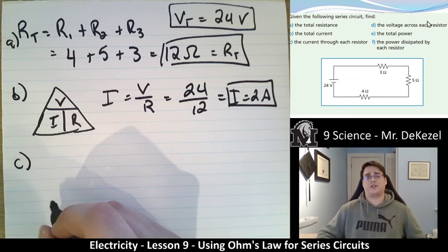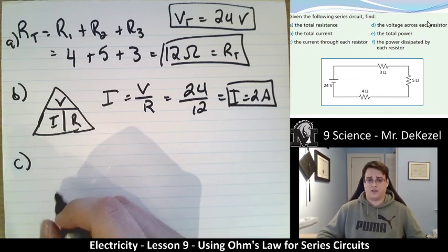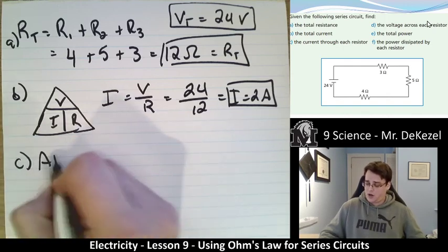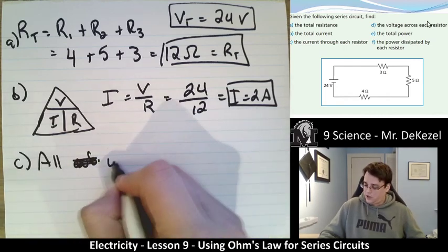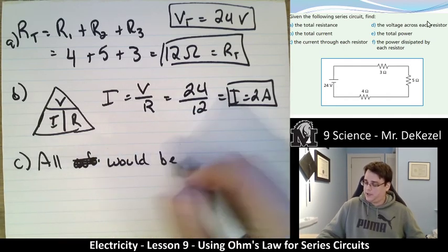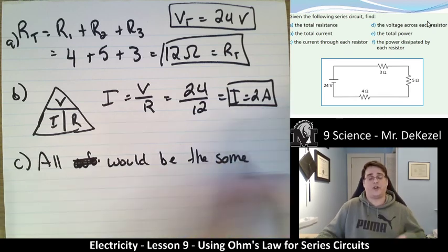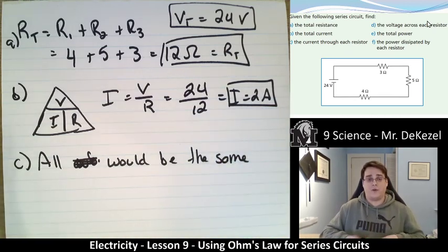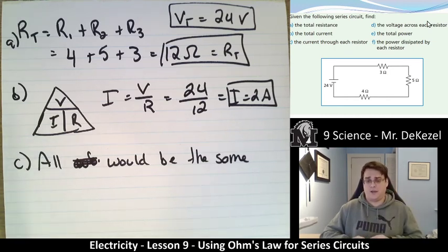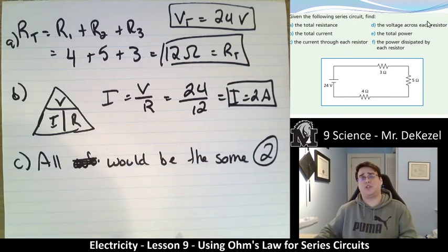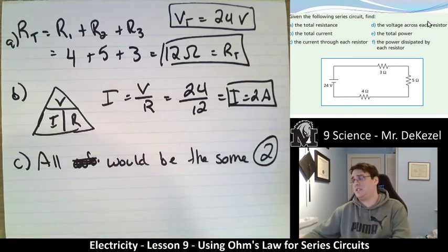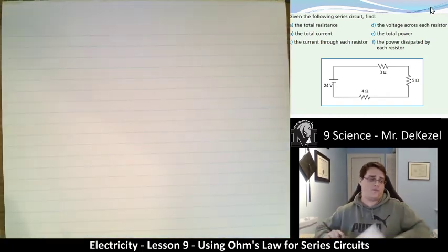For part C, the question asks: what is the current through each resistor? In a series circuit, the current through each resistor is always the same. We found the current to be 2 amps, so the current through each resistor is 2 amps.